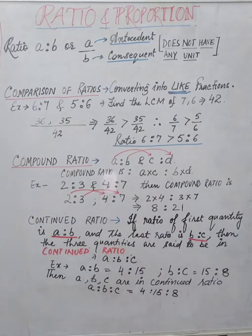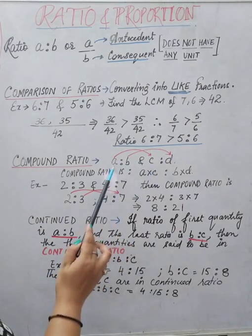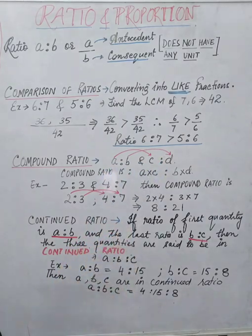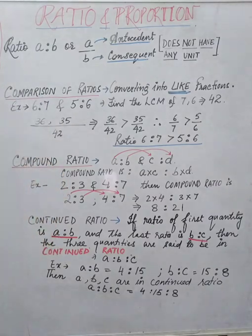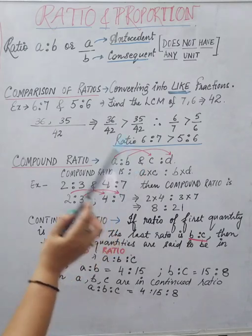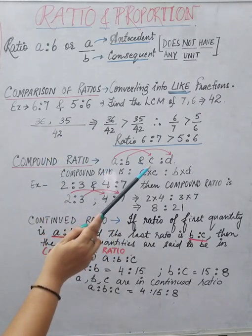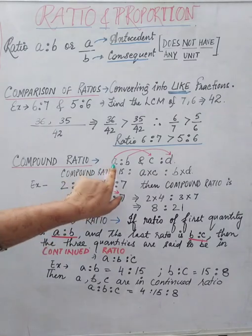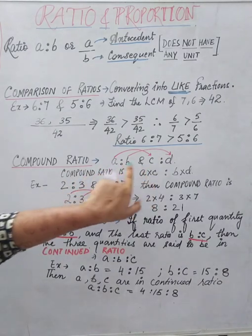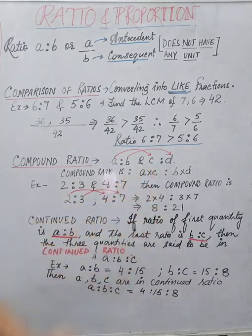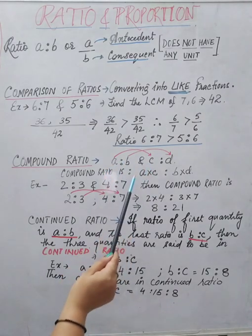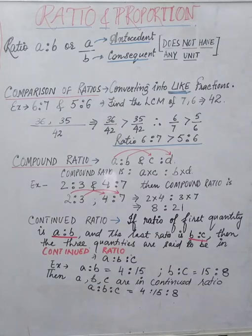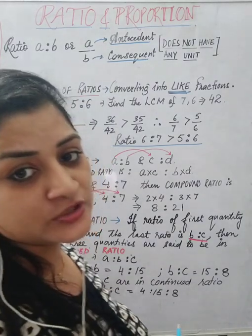Now we will learn what is compound ratio. When we have two different ratios, a:b and c:d, to express them as a compound ratio, we multiply the antecedent of the first ratio with the antecedent of the second ratio, and the consequent with the consequent — that is, a×c is to b×d.